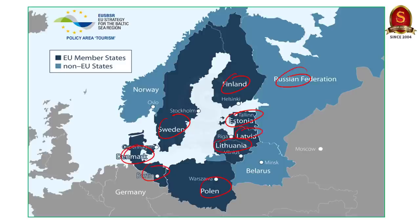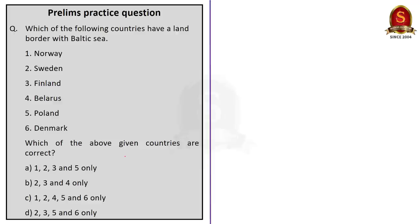In the given countries, Norway and Belarus do not have a border with the Baltic Sea. So the correct answer is option D — 2, 3, 5 and 6.